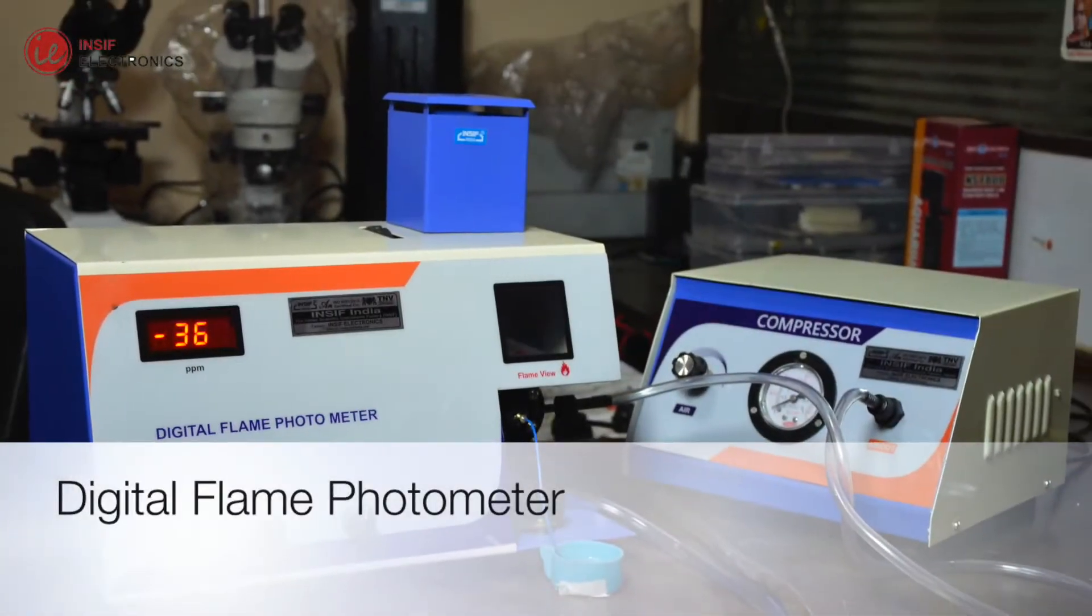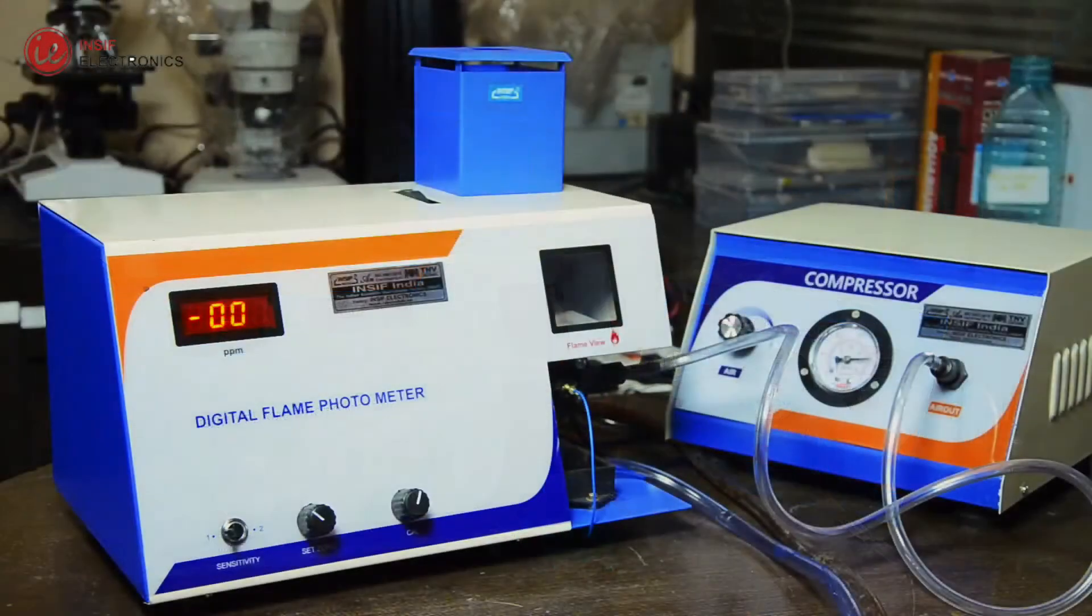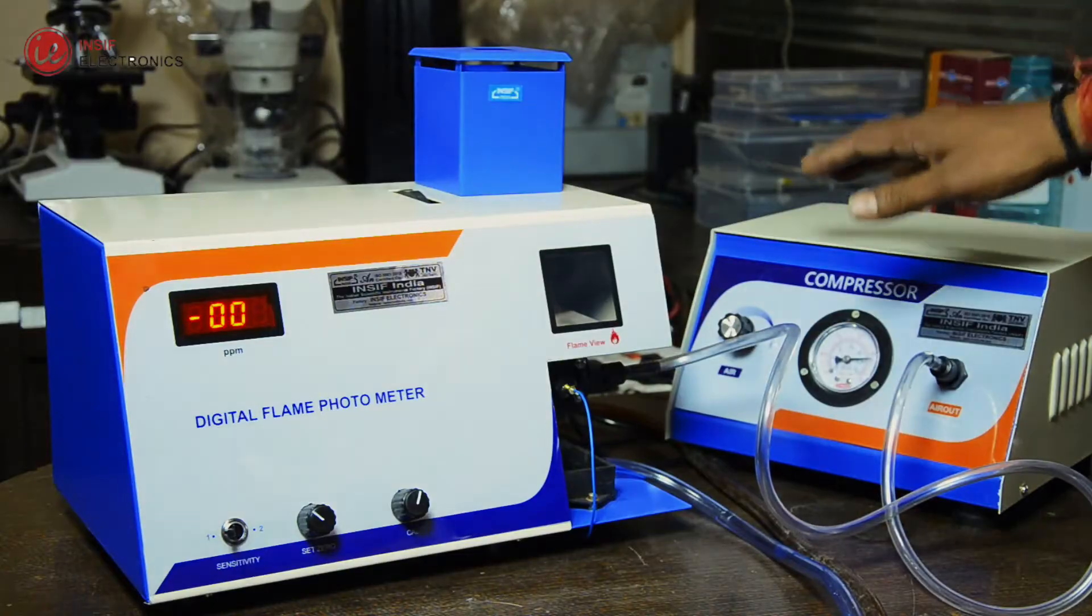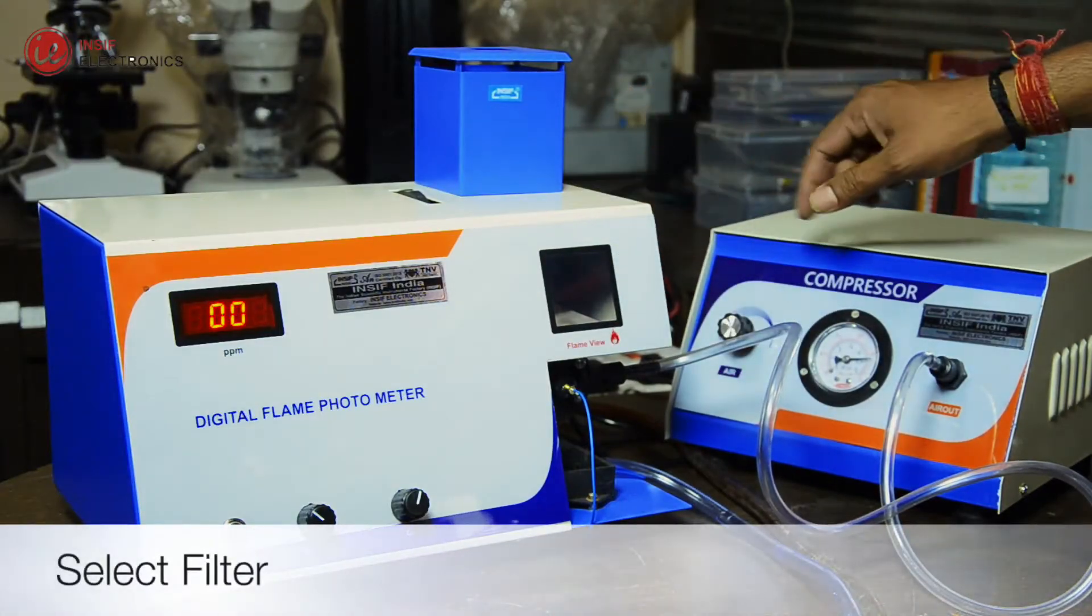Flame Photometer is used to determine the concentration of alkali and alkaline earth metals in various samples.